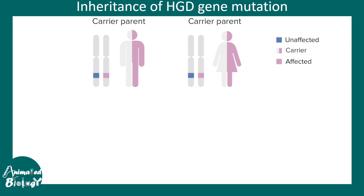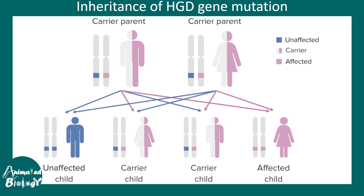When it comes to inheritance of the HGD gene mutations, it's autosomal recessive. That means if both parents are carriers — meaning one allele has the mutation — there is a 25% chance that the next generation would be affected by this disorder, and there is also a chance that there would be several carriers in the next generation.